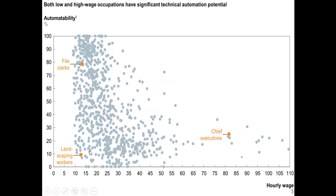Surprisingly, one of the people faring the best is a landscaping worker. They don't make a ton of money, but the ability to automate landscaping would be really difficult because everybody's yard is different — the shape, the topography, what to plant in each place, whether it's shady, boggy, or dry.